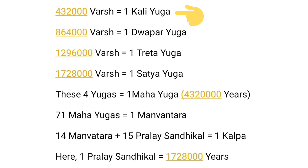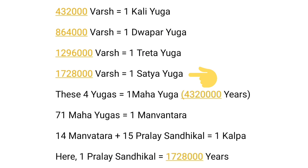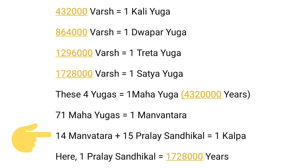4,32,000 years make Kali Yuga, the era of deterioration, which we are currently living in. Before it, there was Dwapar Yuga of 8,64,000 years. Before Dwapar, there was Treta Yuga of 12,96,000 years. And before that, there was Satya Yuga consisting of 17,28,000 years. Summing up these four Yugas, we get one Mahayuga — the great period of 43,20,000 years. 71 such Mahayugas make one Manavantara, and 14 such Manavantaras along with 15 Pralaya Sandhi Kals, each of 17,28,000 years, makes one Kalp.